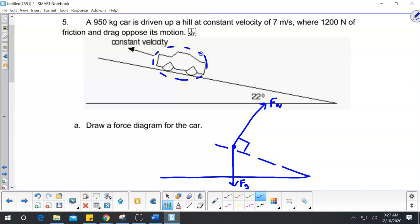Then it says I have 1,200 Newtons of friction and drag that oppose the motion. So they're going to go in the opposite direction. So this is my force friction and force drag.